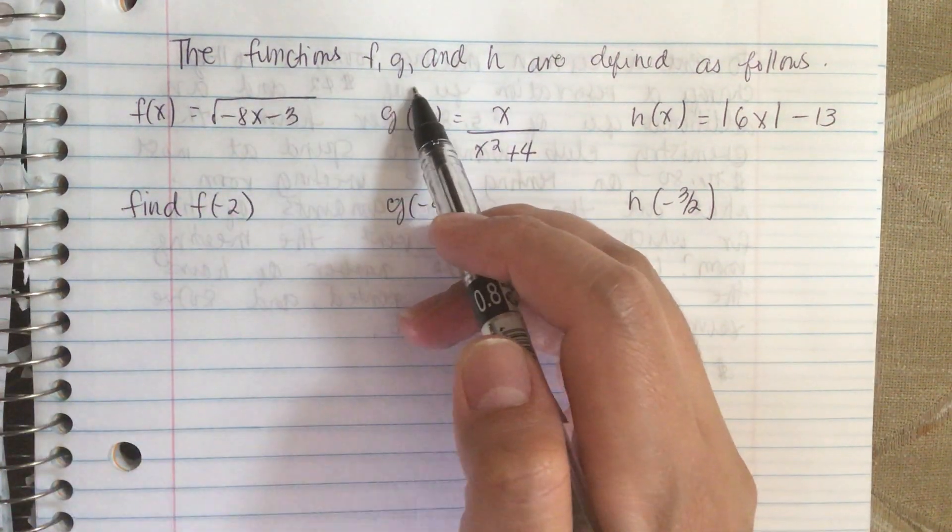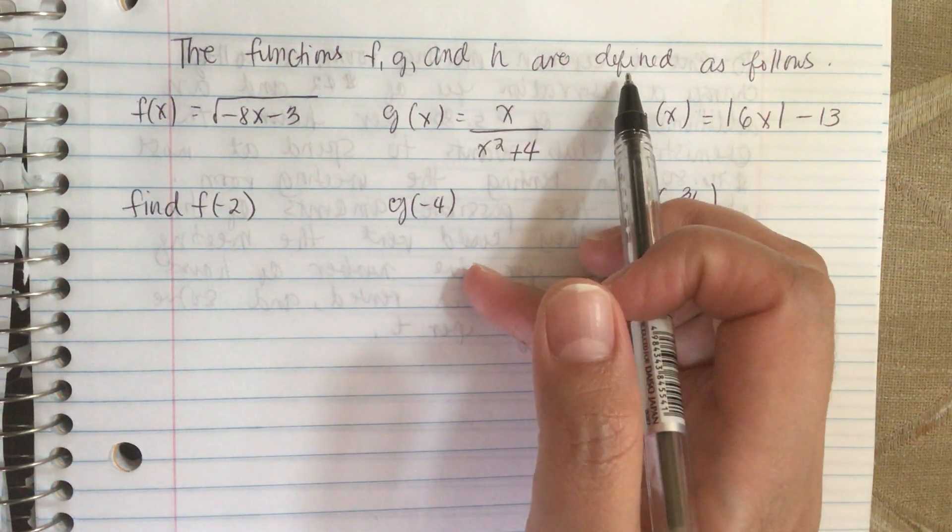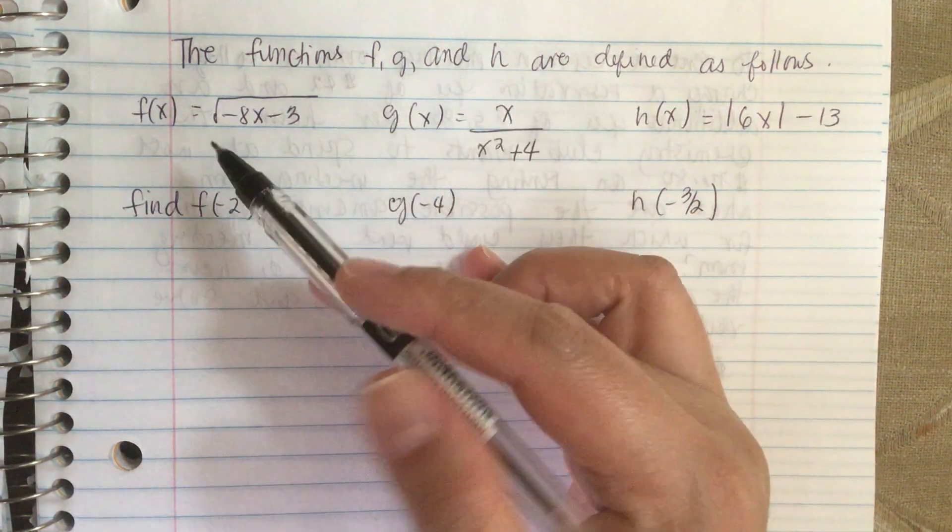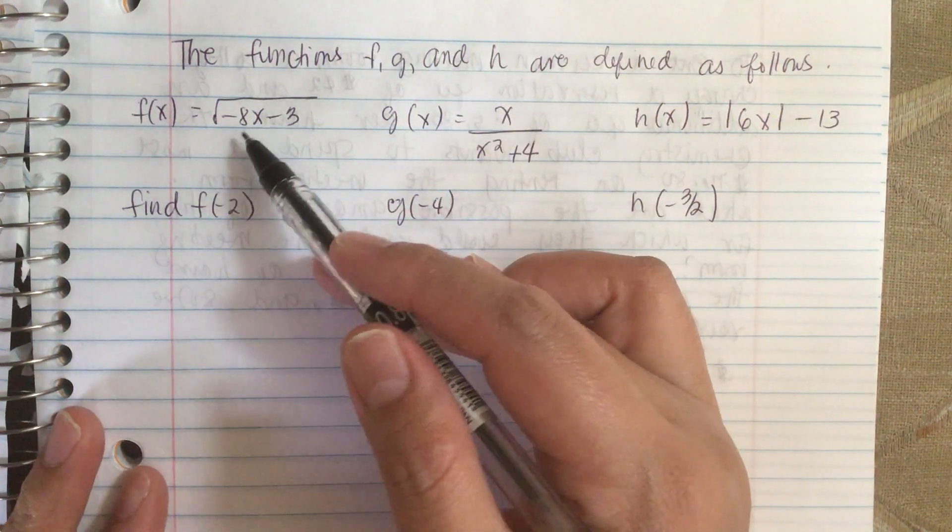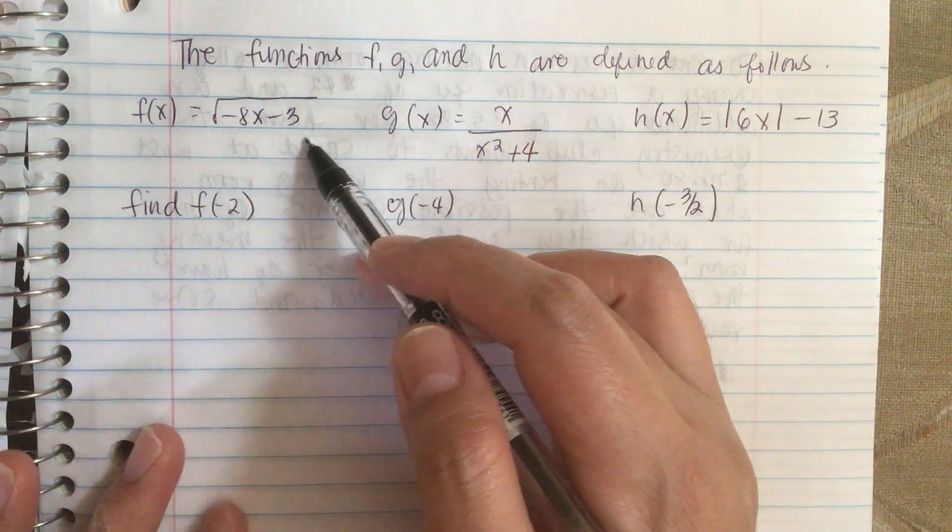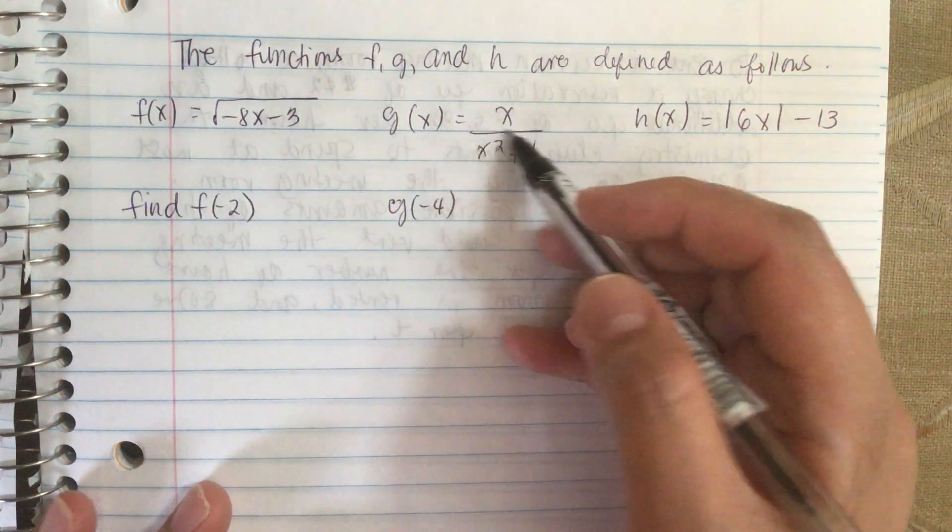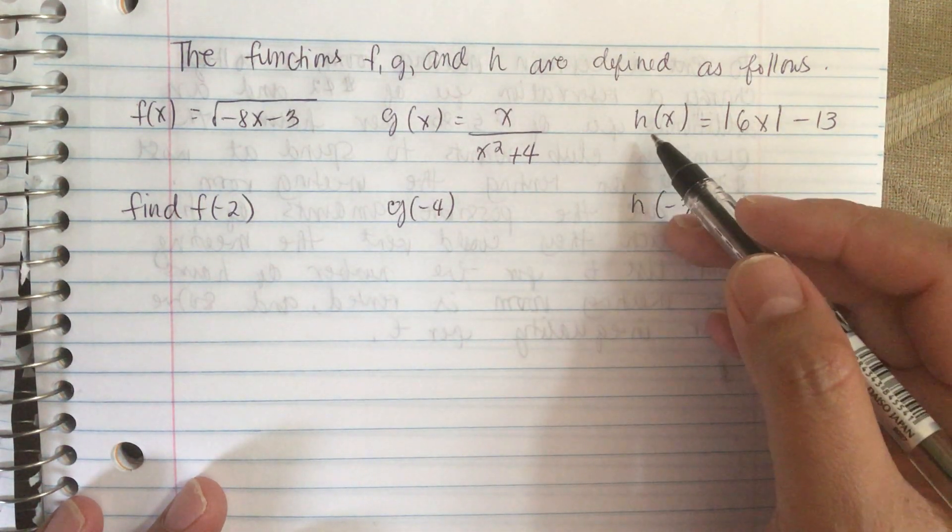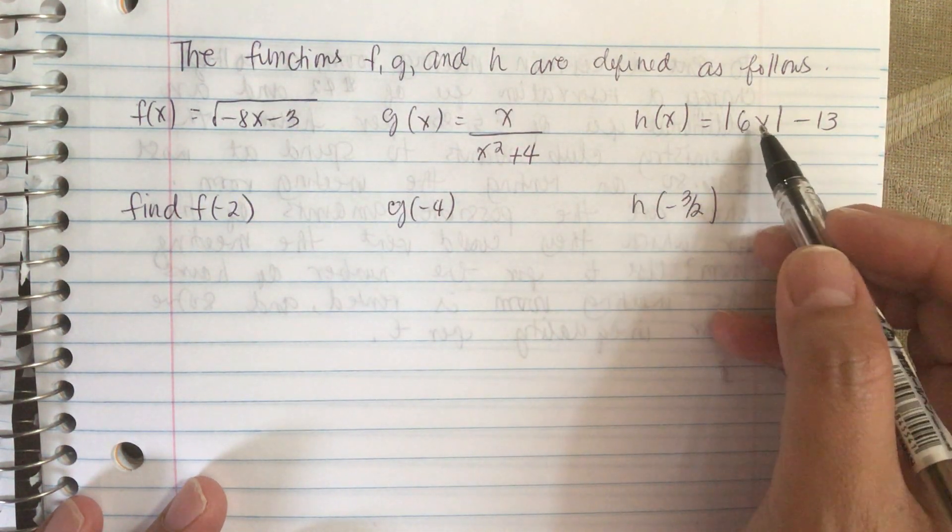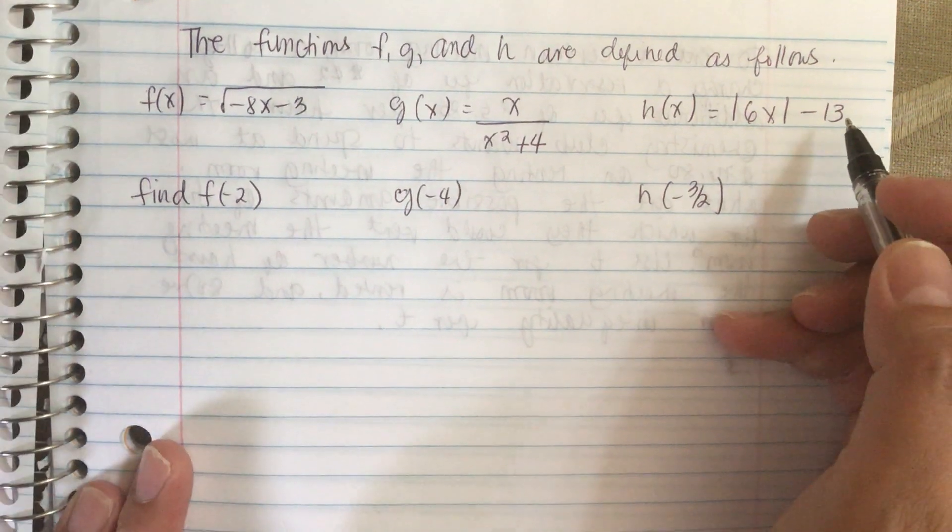The functions f, g, and h are defined as follows. f of x is equal to the square root of -8x - 3, g of x is equal to x over x squared plus 4, and h of x is equal to the absolute value of 6x minus 13.